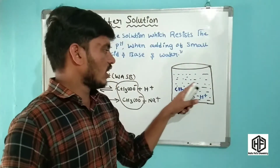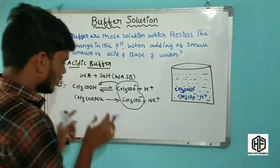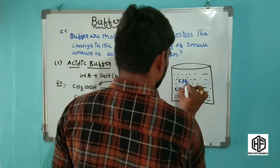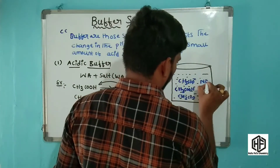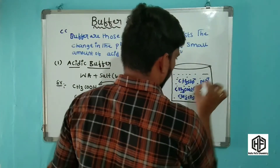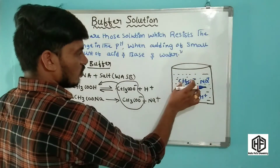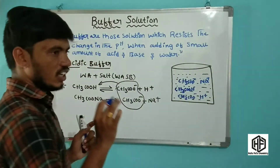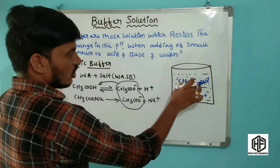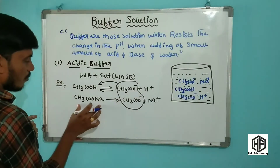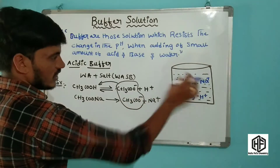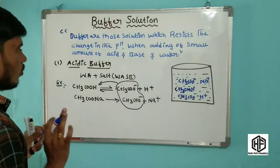Buffer solutions are classified into two categories. The first category is called acidic buffer. Acidic buffers are made up of a mixture of a weak acid and its salt of conjugated base, that is called the salt of weak acid and strong base.